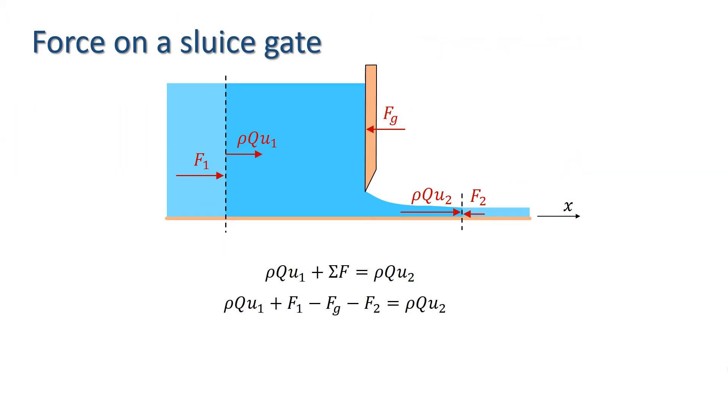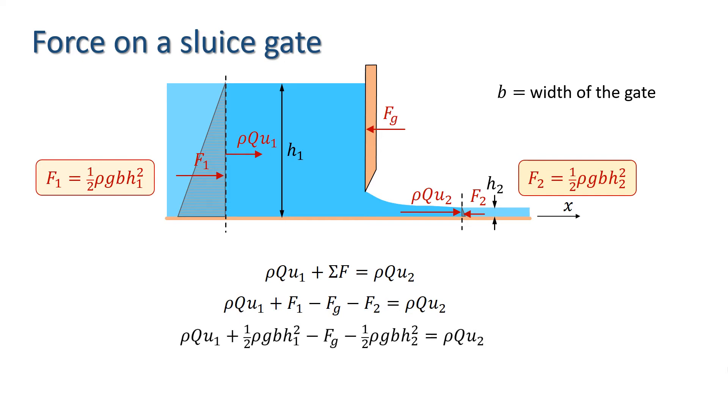Forces F1 and F2 are hydrostatic thrusts across sections 1 and 2 respectively, and we know from hydrostatics that they have the form a half rho g bh1 squared and a half rho g bh2 squared respectively. The force Fg is unknown and is, in this case, what we're trying to find. Thus, we have this equation.